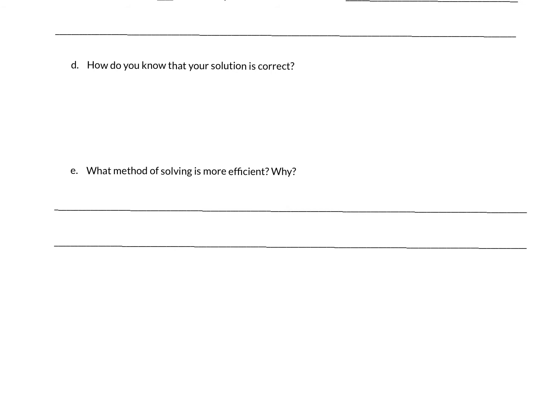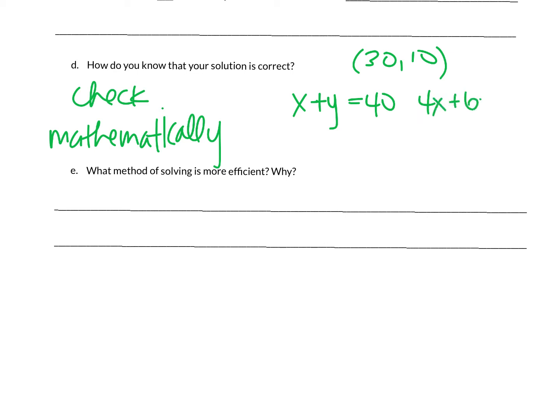Now how do you know the solution is correct? We talked about how you check, and you check mathematically. We have the point 30, 10. We have the equations: x plus y equals 40, 4x plus 6y equals 180. Take your ordered pair and plug it in. 30 plus 10 equals 40, well yeah. And then 4 times 30 plus 6 times 10, is that 180? 4 times 30 is 120, 6 times 10 is 60, and when I add them up, yes, it's 180. So you check mathematically to see if it makes both equations true.